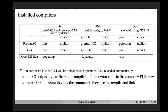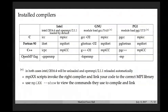We have three families of compilers: Intel, GCC, and PGI. To compile a serial C code with Intel, use 'icc filename.c'. For MPI codes — C, C++, or Fortran — use the MPI wrappers like mpicc, mpic++, or mpif90. For OpenMP, pass the right flag: '-qopenmp' for Intel, '-fopenmp' for GCC, or '-mp' for PGI.